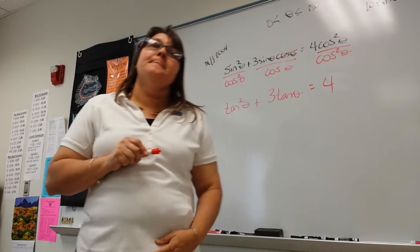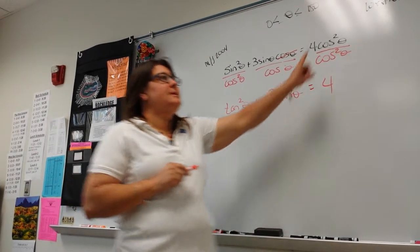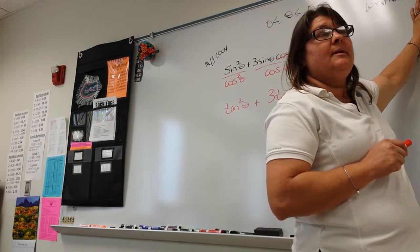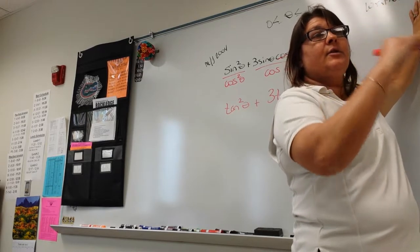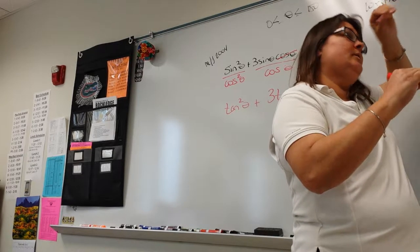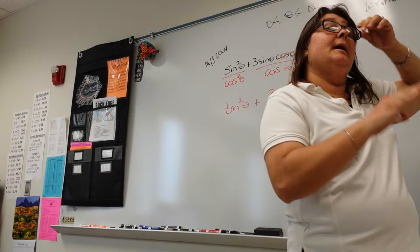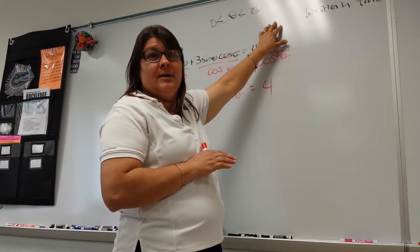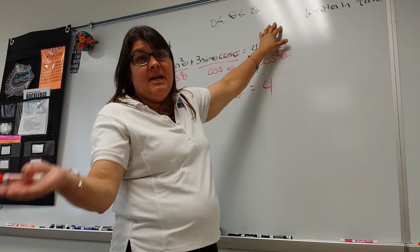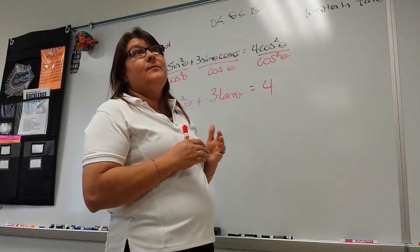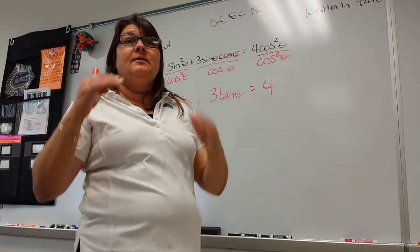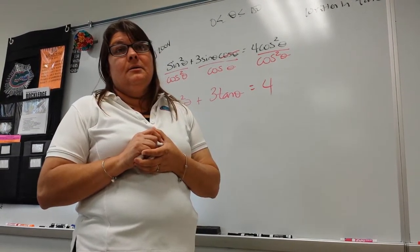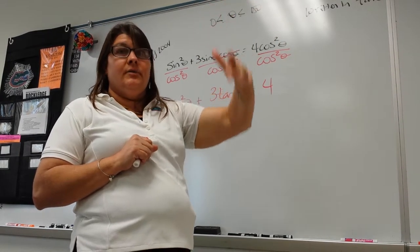Student: How did you decide to divide by cosine squared? Teacher: I know my goal is to get the word tangent. Tangent happens when I have sine over cosine. I don't want the word cosine left over at all. If I divided by cosine to the first, I'd have one cosine left. So the way to get rid of cosine is to divide by all the cosines, which is cosine squared.